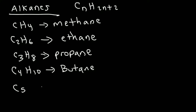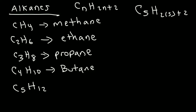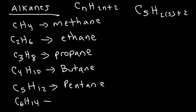So a five-carbon alkane will have 12 hydrogen atoms. If n is 5, then it's going to be H(2×5+2) — that's 10 plus 2, you get 12. A five-carbon alkane is known as pentane. A six-carbon alkane is known as hexane. You may want to take some notes, because you'll need to know this at least up to 10.